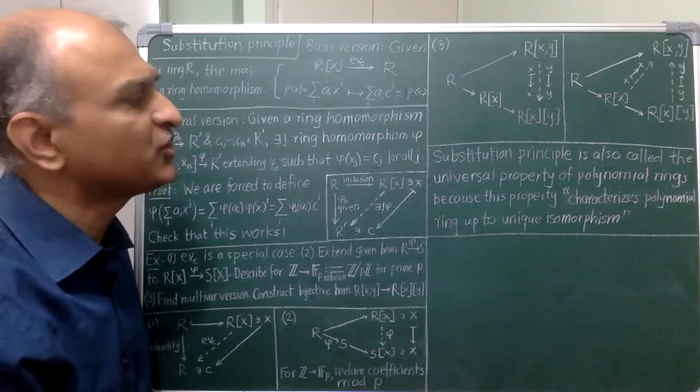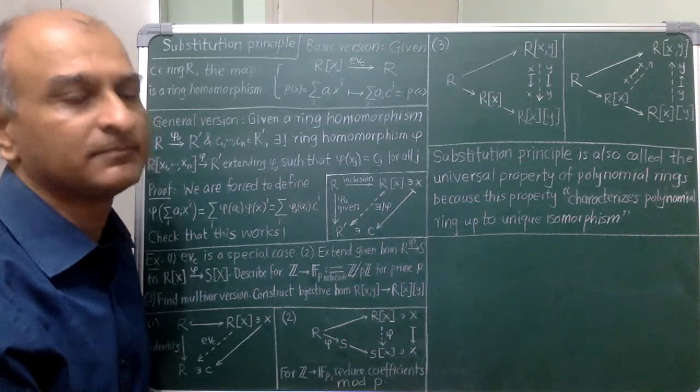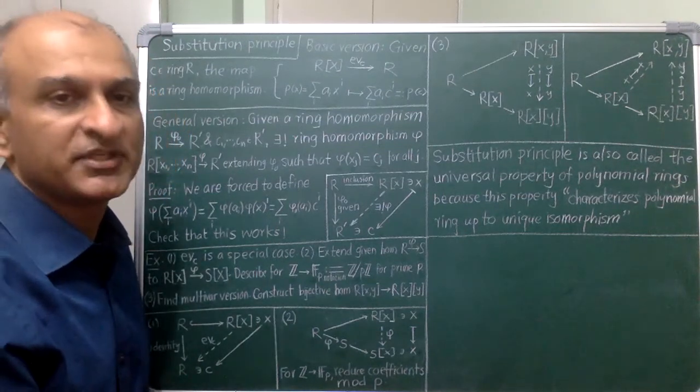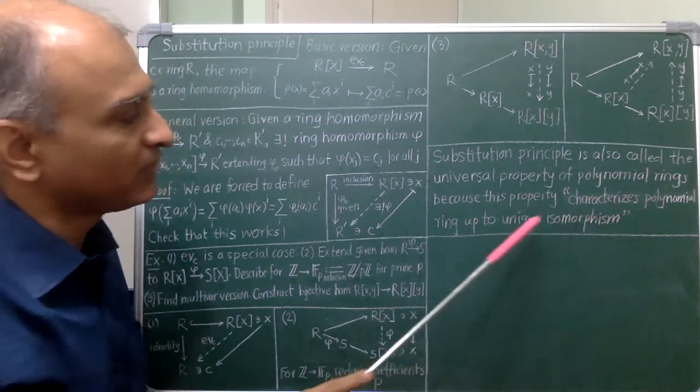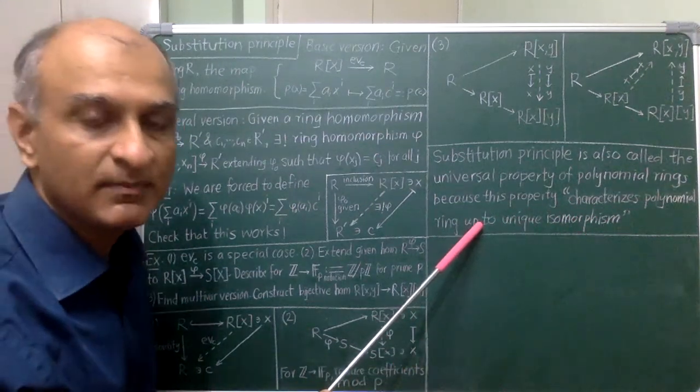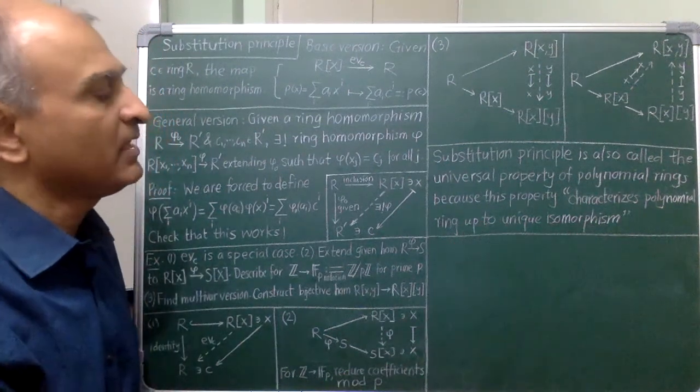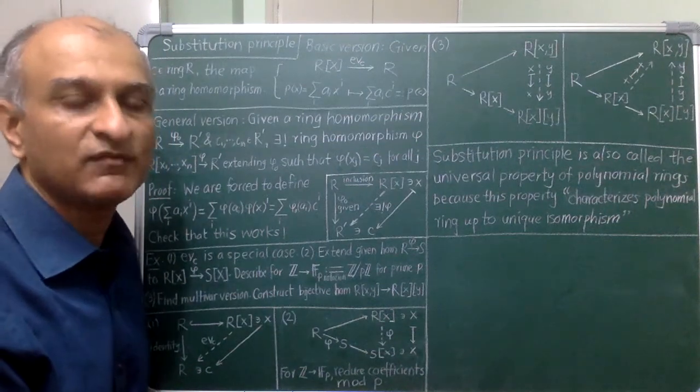Now this use of substitution principle may look like sleight of hand and in a way it is. In fact, analogously using substitution principle, you can show that it completely characterizes the polynomial ring whether in one variable or more variables up to unique isomorphism. That is why the substitution principle is called the universal property of the polynomial ring.